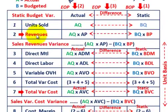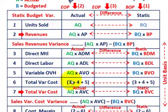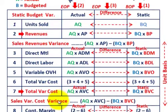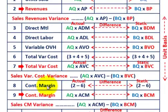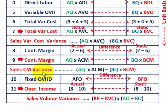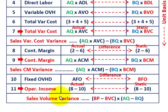We'd start out by determining revenues, then determine our variable costs, which include direct material, direct labor, and variable overhead. We total those variable costs, subtract them from revenues to get the variable cost variance. The difference between revenues and variable costs gives us our contribution margin, and from that we determine the contribution margin variance. Subtracting fixed overhead from contribution margin gives us operating income, from which we determine our sales volume variance.